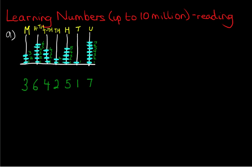Now what we're going to do is start from the right-hand side and count three across — one, two, three. There are three digits there. After the third digit, we put a comma. Then we count three more digits — one, two, three — and then we put another comma. The reason why we put the commas in is so that it is easier to read. If a number has got two commas, then we're into the millions.